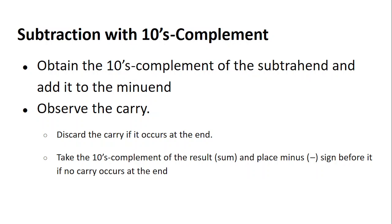Let's look at the steps involved in subtracting using tens complement. First, we are supposed to find the tens complement of the subtrahend and add it to the minuend. When you add the tens complement to the minuend, if there is a carry, we have to discard that carry. However, if there is no carry, we are supposed to find the tens complement of the result and put a minus sign before it.